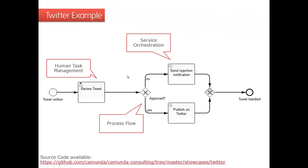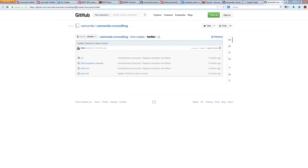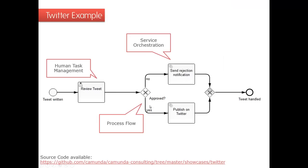Going back to slides: what you saw is a simple process example — our Twitter process. The whole codebase is available on our GitHub account at GitHub Camunda, in the Camunda Consulting Repository, as a showcase-twitter project. It demonstrates the two typical use cases of BPM: human task management and service orchestration. Your use case might be only service orchestration with no user interaction, only human task management, or a mix of both — all are valid.